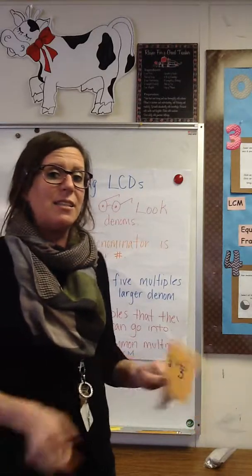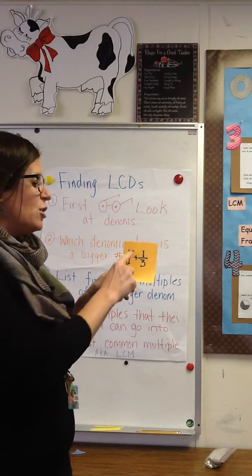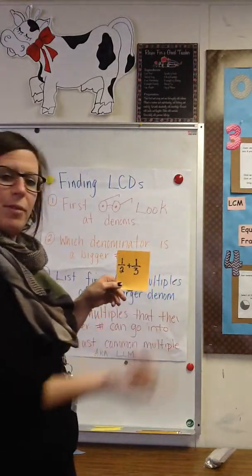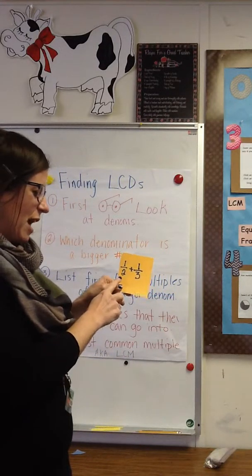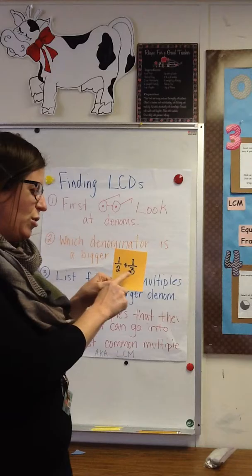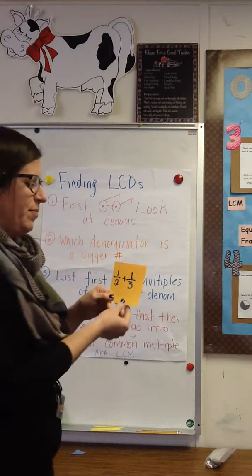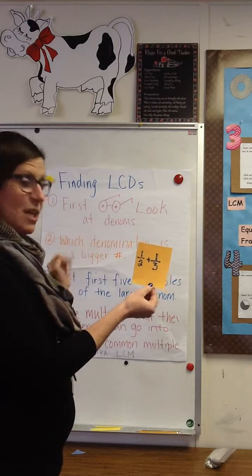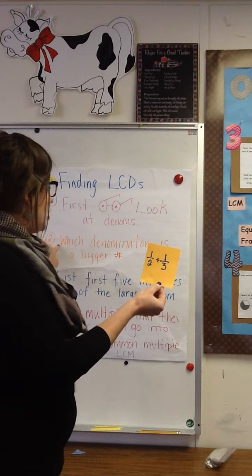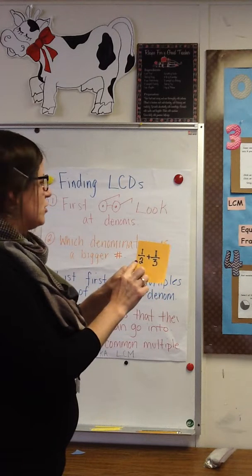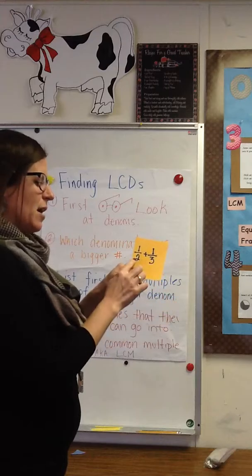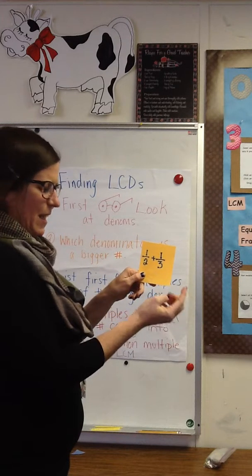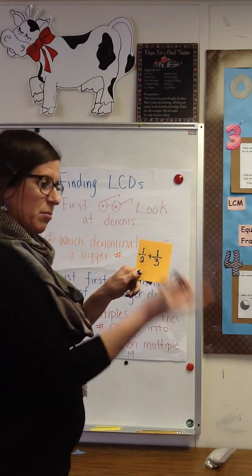I break it down into steps and you're going to be able to do this. Step one: look at the denominators. That's easy — my denominators are two and three. Step two: decide which of those two numbers is the bigger number. Which is bigger, two or three? Well, that's not hard — three is the bigger number.